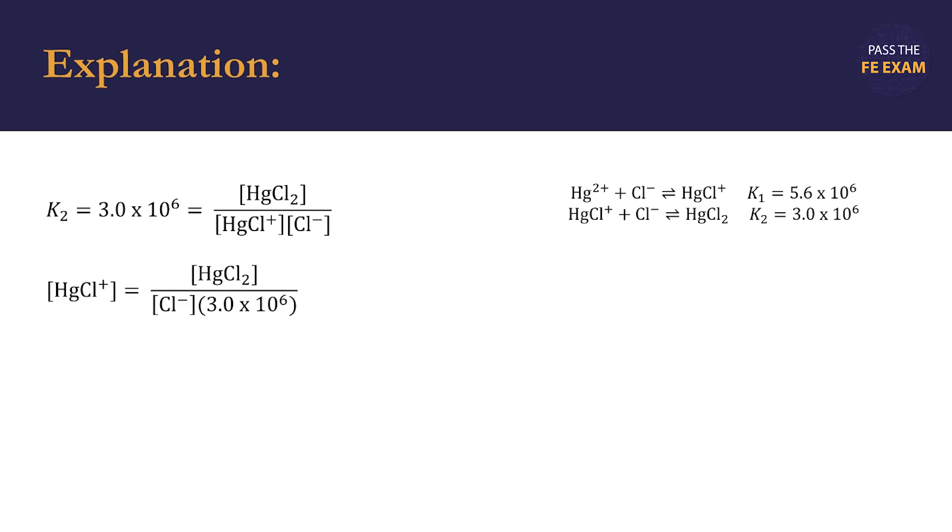With the second equation, we isolate our unknown variable, the concentration of HgCl+, on the left-hand side of the equation. We can substitute in our known concentrations: 5 times 10 to the negative 7 for aqueous mercury 2 chloride in the numerator, and in the denominator, 2.5 times 10 to the negative 2 for the chloride ions. Multiplying out and dividing the right-hand side of the equation, we find that the concentration of HgCl+ is 2 times 10 to the negative 5.